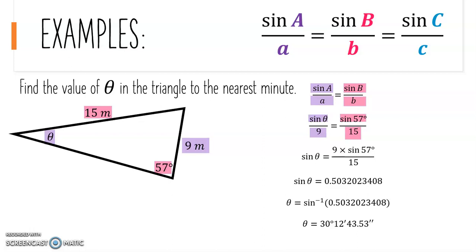Our question asks us to round to the nearest minute. We round up the minute if seconds are greater than 30 and keep it the same if seconds are less than 30. Because our seconds are greater than 30, we round our answer up to 30 degrees, 13 minutes.